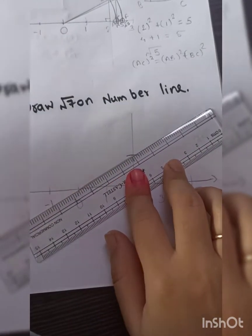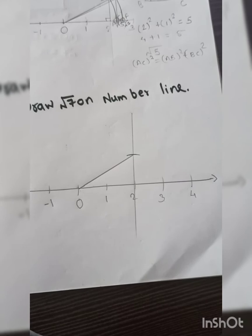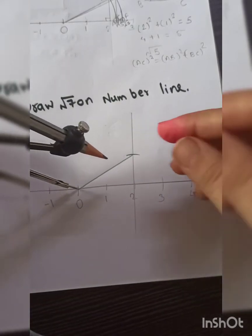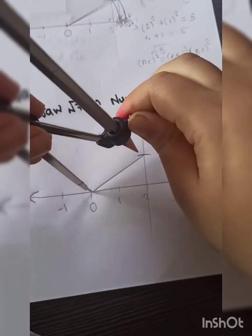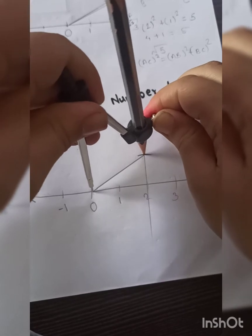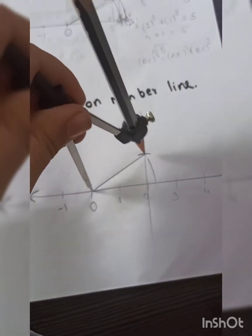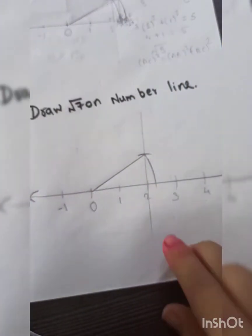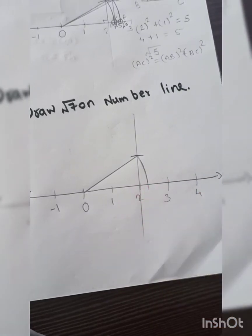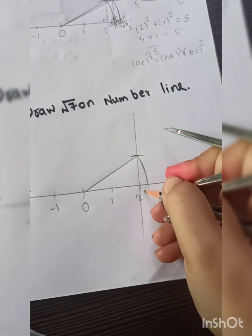Now again I am telling you, I am drawing for root 5, then only we will be able to draw for root 6. Now use this as your radius. Keep the pointed end of your compass on 0, use this as radius, and draw the arc on the number line. The first one which we got is root 5. This is our root 5 point. Write down root 5 here.